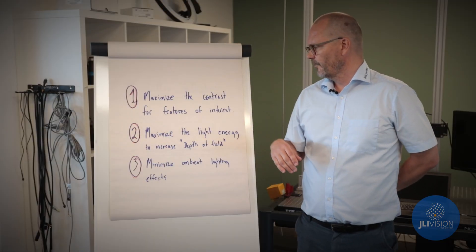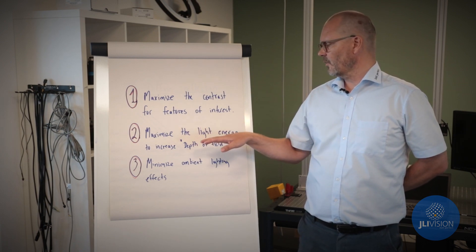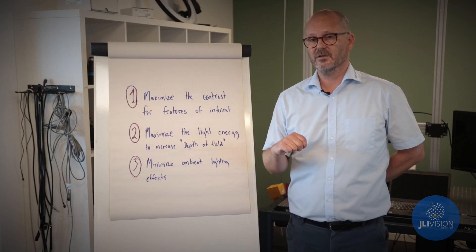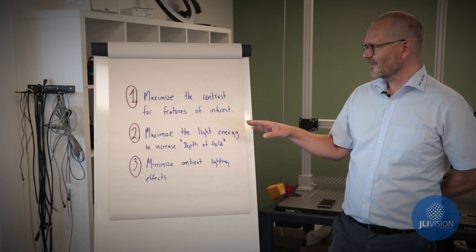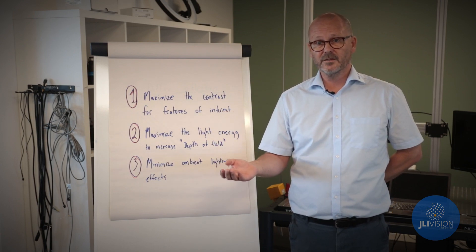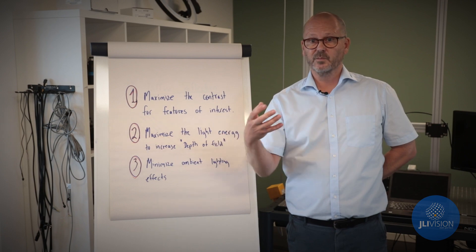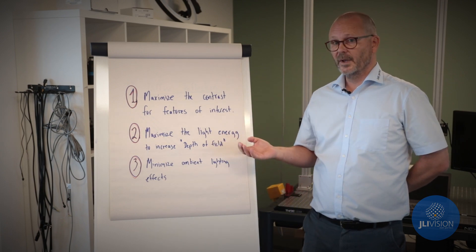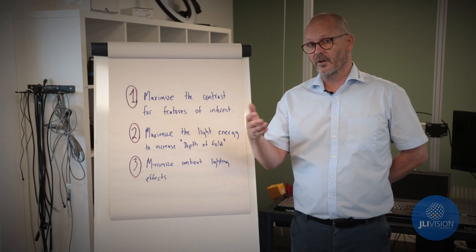Point two, maximize the light energy to increase the depth of field or the signal to noise ratio in the image. This will make your system more robust towards movements on axis, objects moving closer or further away. It will also make it more robust towards other motions.